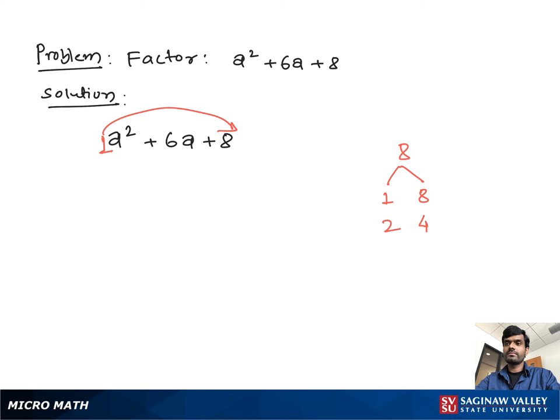Now we find a pair of numbers which multiply to give us 8 and add to give us 6. Here we see 2 and 4, which when multiplied give us 8 and when added give us 6.